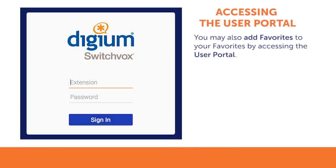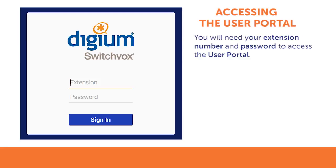You may add Favorites to your Favorites in your user portal. To access the user portal, you will need your extension number and password. If you do not have this information, contact your system administrator.